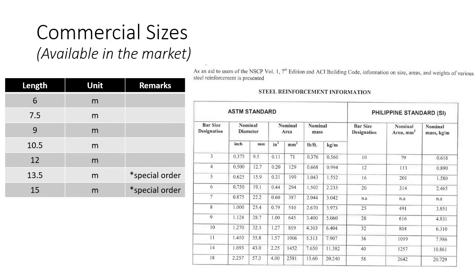Next is the commercial length: 6m, 7.5, 9, 10.5, 12, 13.5, and 15m. For 13.5 and 15m, these are special orders. Ibig sabihin ng special orders, pili lang yung mga supplier na kayang mag-fabricate ng 13.5m and 15m. Wala yan sa mga soaking hardware. (Translation: Special orders mean only select suppliers can fabricate 13.5m and 15m — you won't find those at regular hardware stores.)